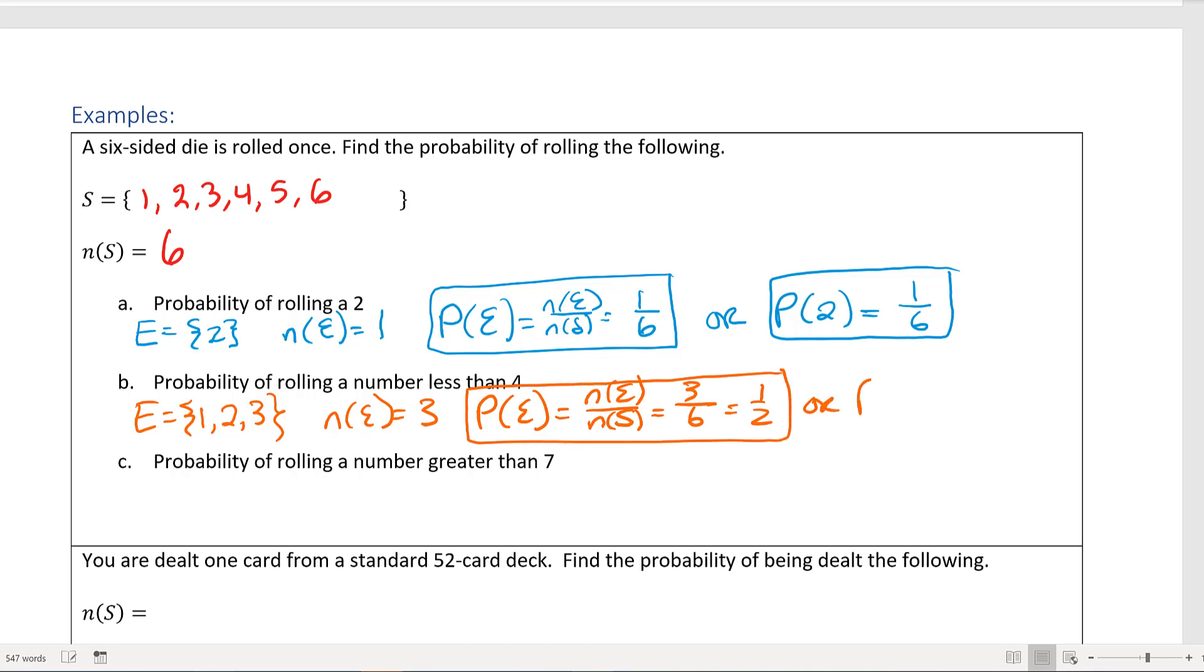Another way of writing this a little bit more succinctly without the E: you could have written P(less than 4), there's 3 ways of that happening out of 6, and that reduces to 1/2.